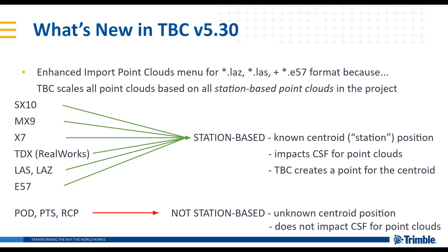The distinction is that TBC computes a known centroid position, which represents the station in the station-based. And this station, depending on where it is in the projection and in your project, impacts that combined scale factor, or CSF, for all of the point clouds in your project — both the station-based and the non-station-based. TBC creates a point for that centroid, and that's where that combined scale factor is applied.